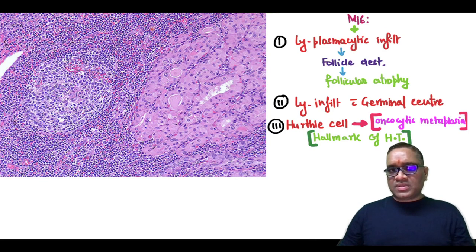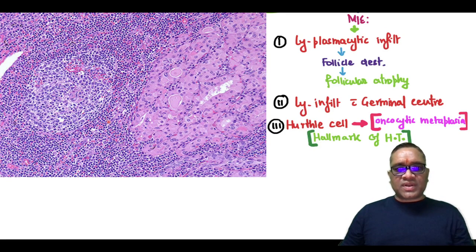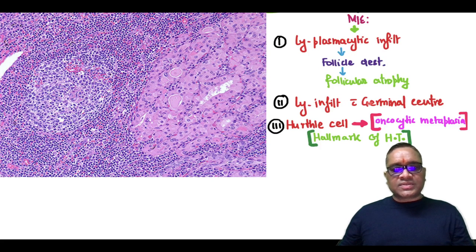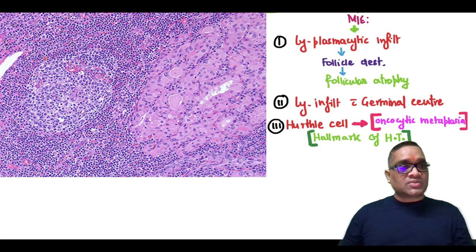You can see this area shows lymphoplasmacytic infiltrate — the follicle has been destroyed and there is atrophy of the follicle. Lymphocytic infiltration is formed with a germinal center, which you can see in between.